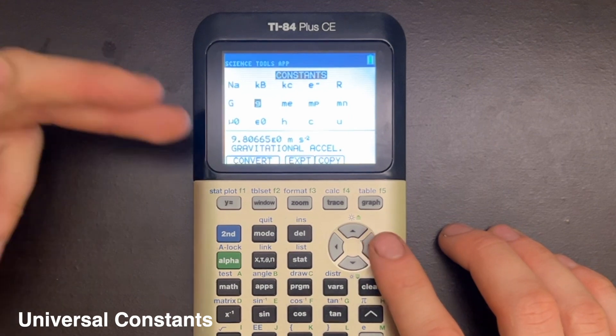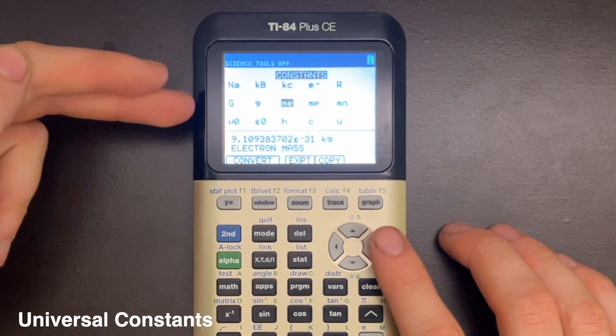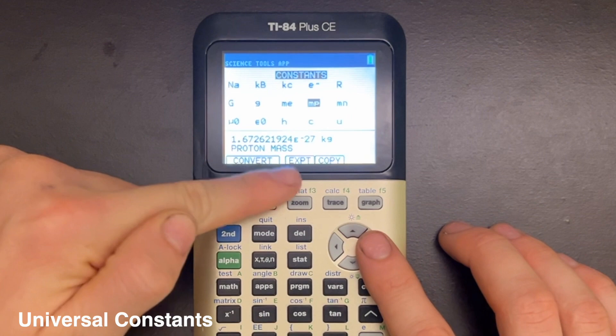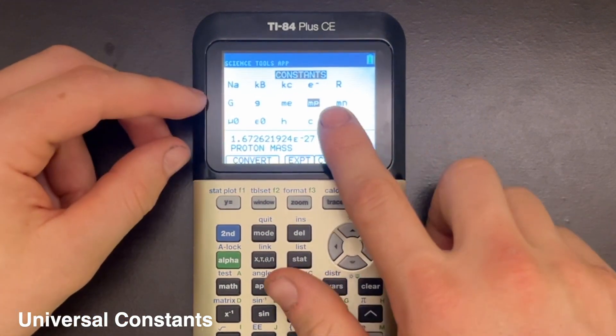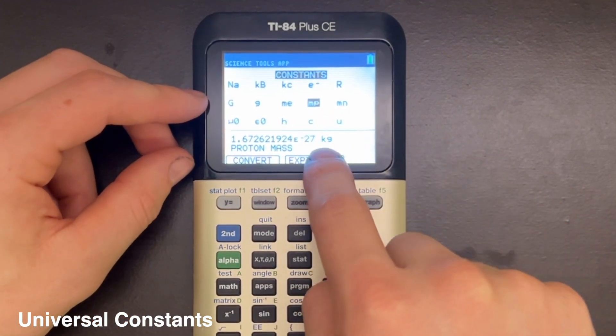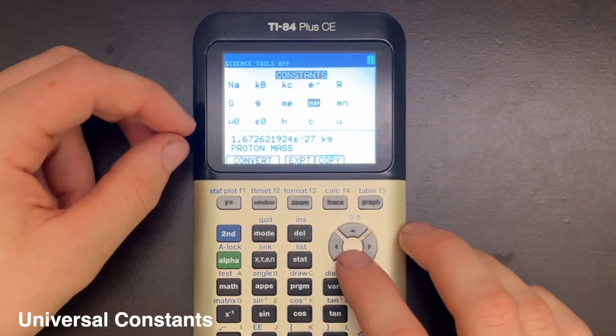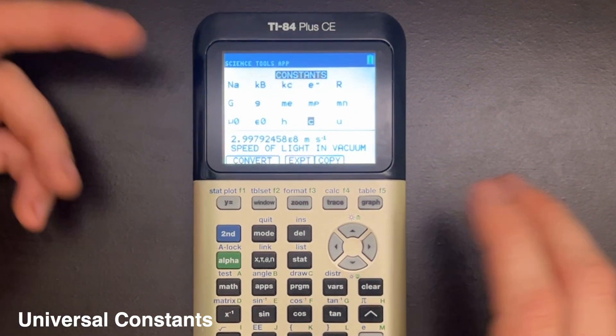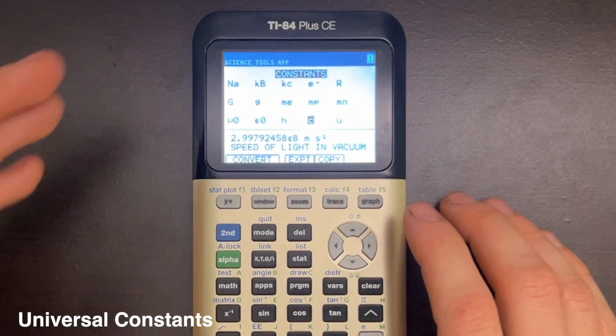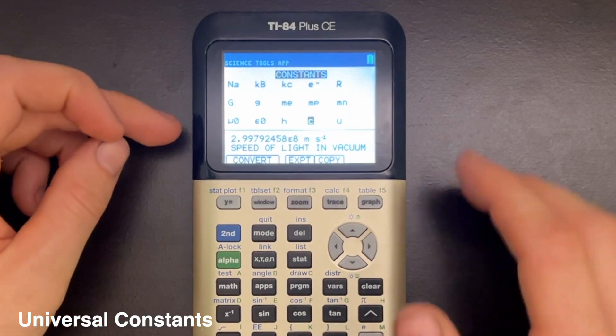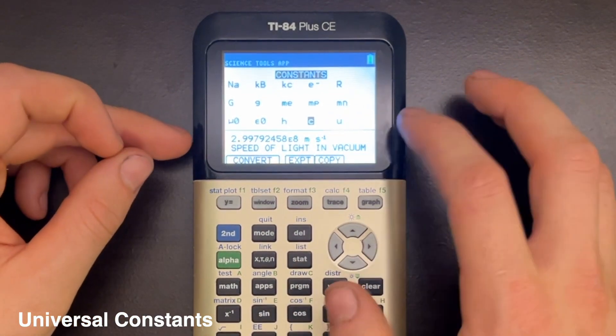Here is acceleration due to gravity on Earth, mass of an electron, mass of a proton, and you'll notice all of the units by default are in SI base units. Here's C, the speed of light. And for some of these, let's say you want the speed of light in miles per hour.